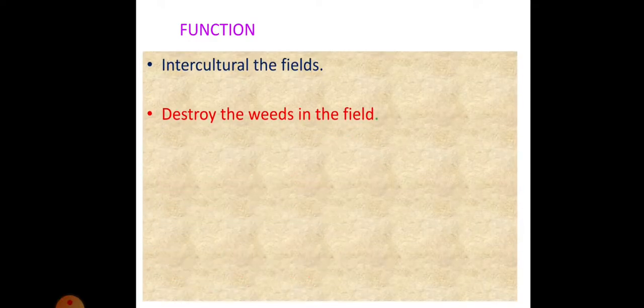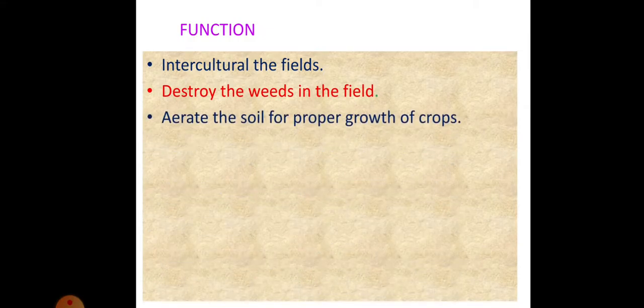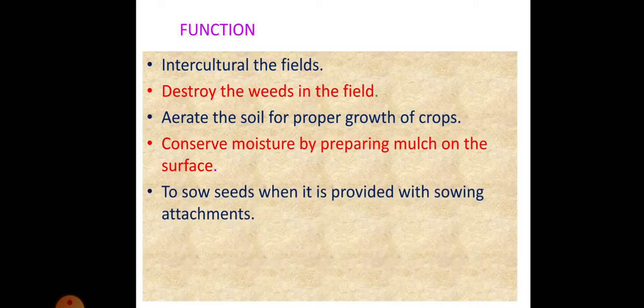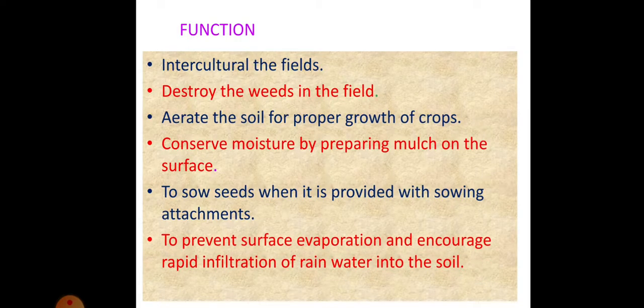The functions of the cultivator include: intercultivating the fields, destroying weeds in the field, aerating the soil for proper growth of crops, conserving moisture by preparing mulch on the surface, sowing seeds when provided with a sowing attachment, and preventing surface evaporation while encouraging rapid infiltration of rainwater into the soil.